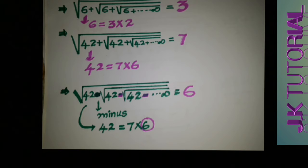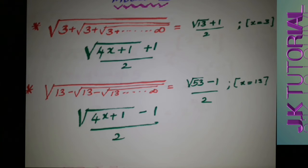But if we can't write the number as a product of two consecutive numbers, then what do we do? For Model 2, consider the square root of 3 plus the square root of 3 plus the square root of 3, and so on to infinity. The number 3 cannot be expressed as a product of two consecutive numbers, so we use the formula: square root of 4x plus 1, plus 1, divided by 2. Here x equals 3, so we get the square root of 13, plus 1, divided by 2.